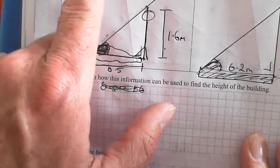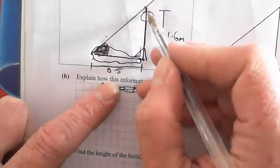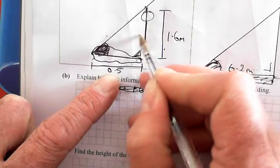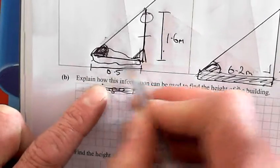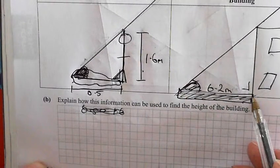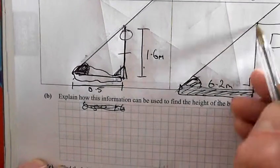So Vera, this is Vera here standing, she is 1.6 meters tall and her shadow is 0.5 meters. There is a house that has a shadow of 6.2 meters and we are trying to find out how high it is.